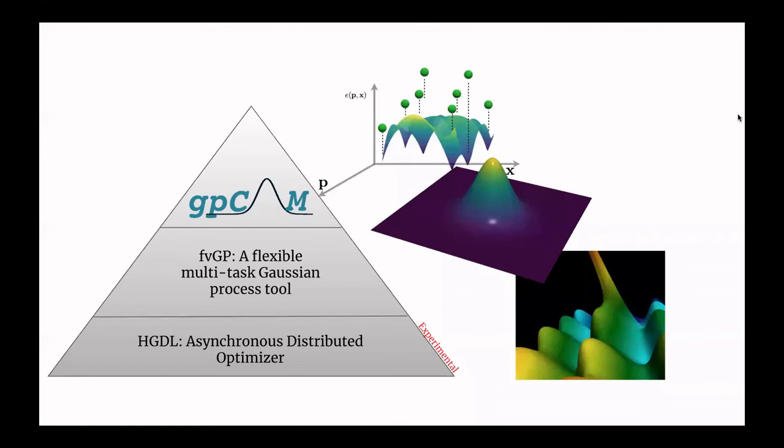As I said, we made GP CAM software. It's freely available online. It's based on two downstream APIs, FEGP and HDDL. HDDL is a high performance optimizer that is used for training, but also for the prediction. And FEGP is a very flexible multitask Gaussian process tool. In fact, so flexible that most kinds of domain and physics knowledge can be injected into GP CAM and used for decision-making.